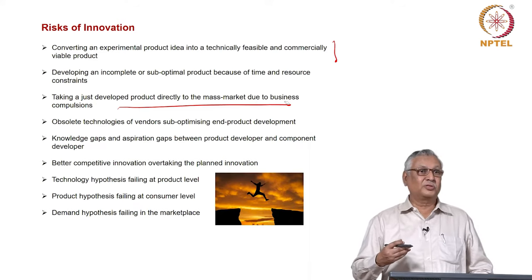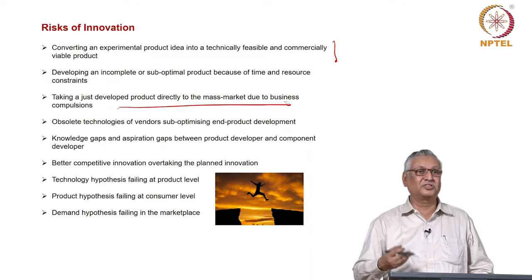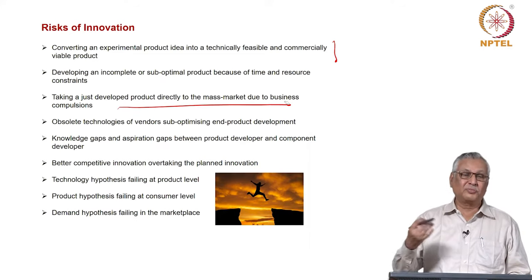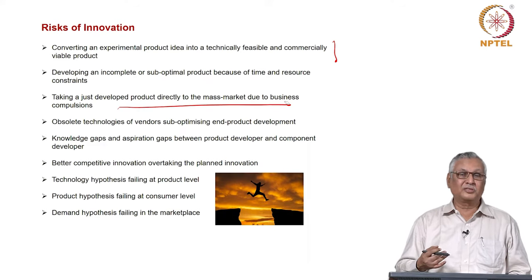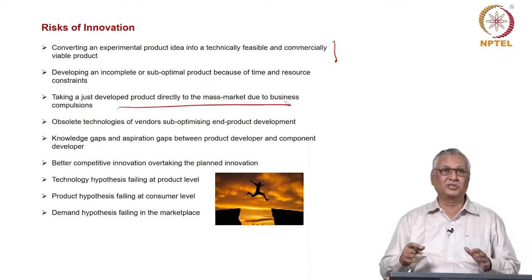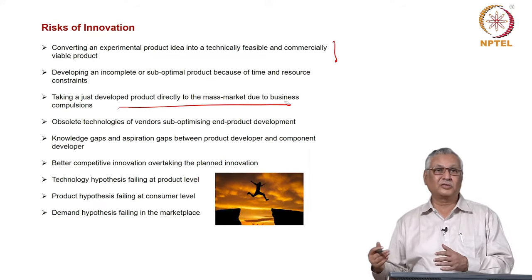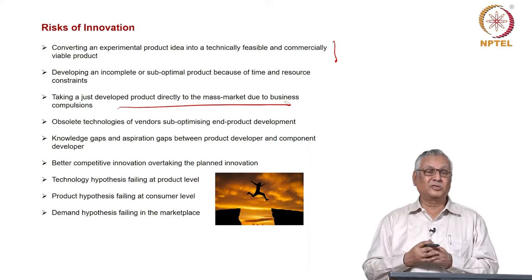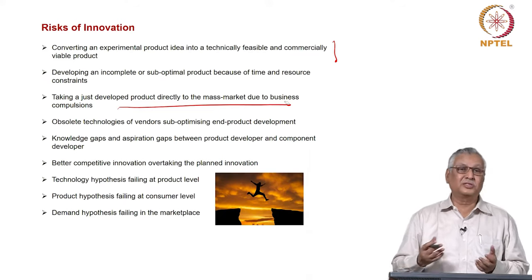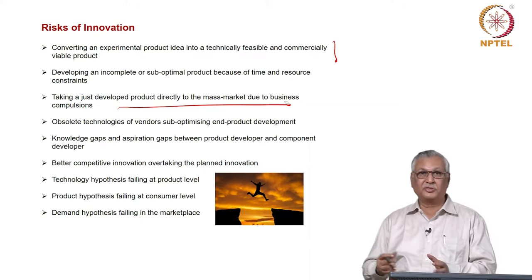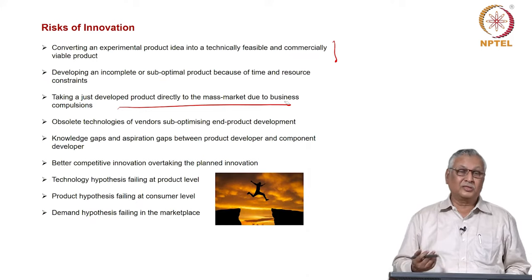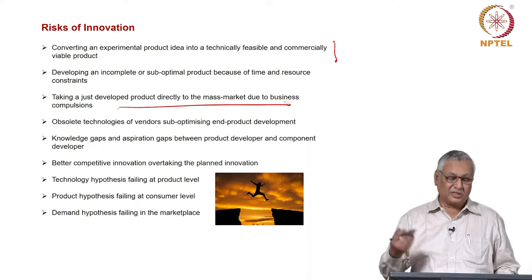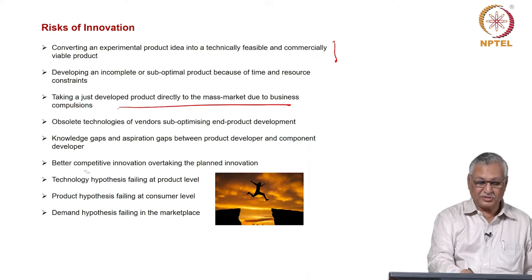Startup founders usually deal in sunrise technology — they do it for the first time, and technically compatible stakeholders in the ecosystem may lag behind. Vendors supporting the startup with new technology may be behind, causing a technological mismatch between the startup's core technology and components supplied by other vendors. The ultimate product, instead of being a high-tech hybrid, could end up being a compromise. There are also knowledge gaps between founders, product developers, and component makers, plus competitive risk from others working on improved innovations.